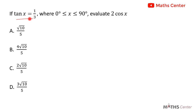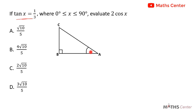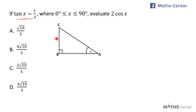Let's illustrate this on a right angled triangle. Let's assume that this is the right angled triangle ABC and let's call the angle at point A, x. We know that tan is equal to opposite divided by adjacent. So if the angle here is x, then the opposite side to x will be 1 and the adjacent side to x will be 3.